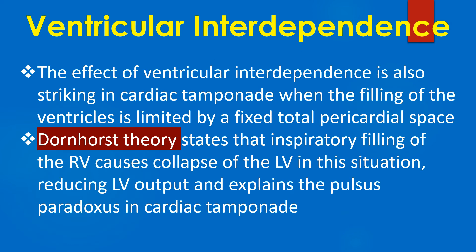The effect of ventricular interdependence is also striking in cardiac tamponade, when the filling of the ventricles is limited by a fixed total pericardial space. Dornhoff's theory states that inspiratory filling of the RV causes collapse of the LV in this situation, reducing LV output, and explains the pulsus paradoxus in cardiac tamponade.